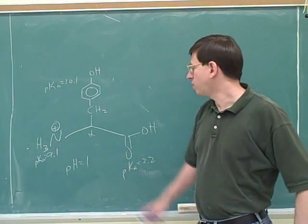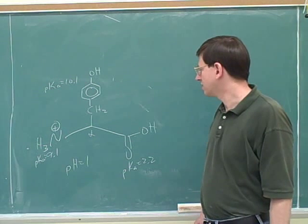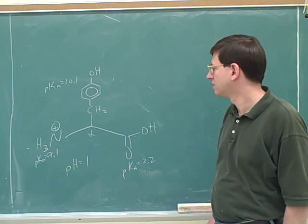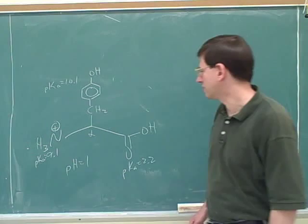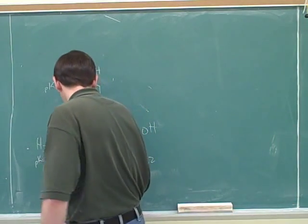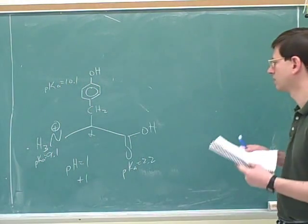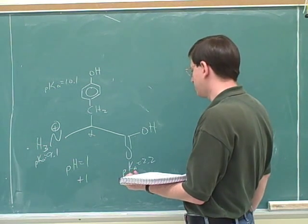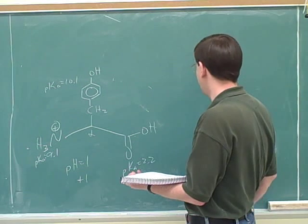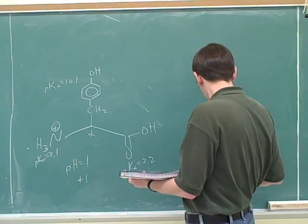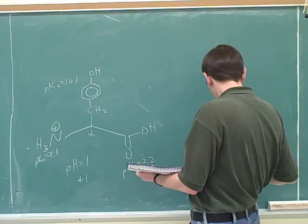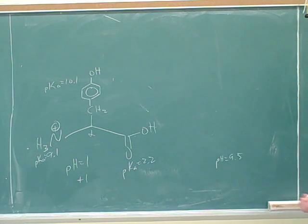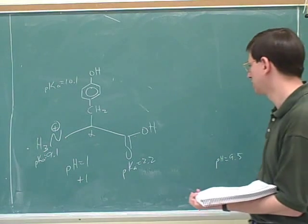At this pH of 1, what would be the net charge on the tyrosine? Plus 1. That's right. Now let's try a pH of 9.5.